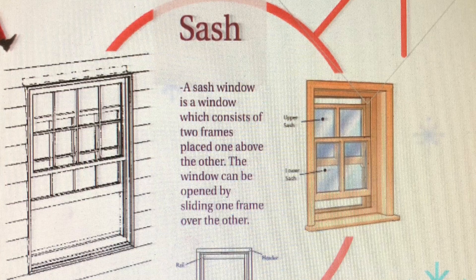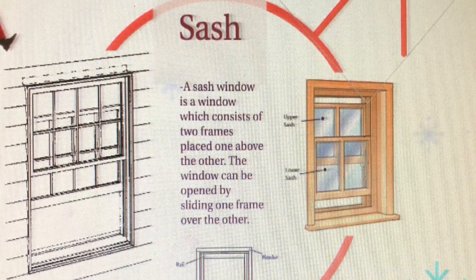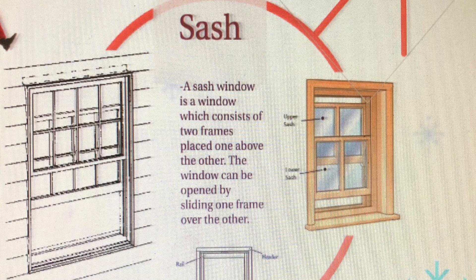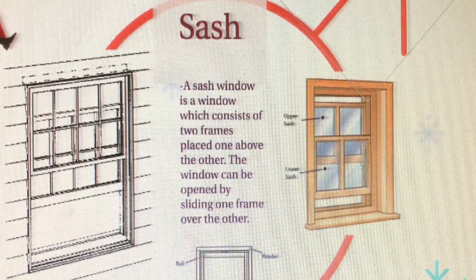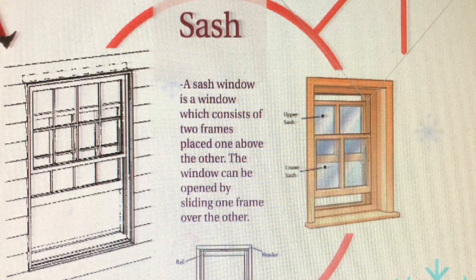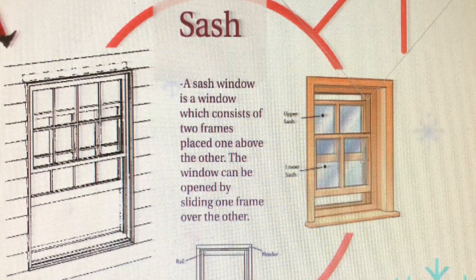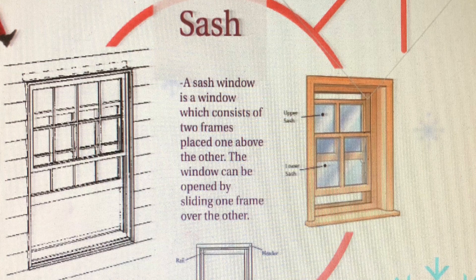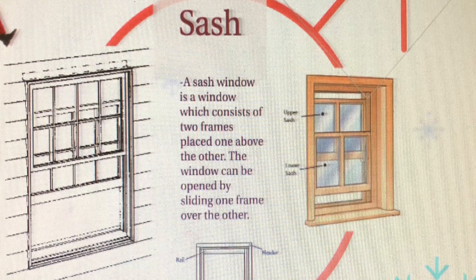So in this story, it says that the man threw up the sash. What is a sash? Well, in that sentence, a sash is a window, which consists of two frames being placed one above the other. The window can be opened by sliding one frame over the other.